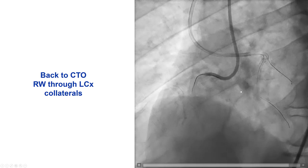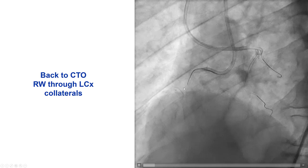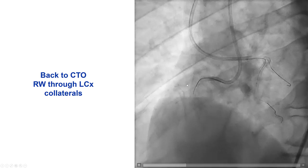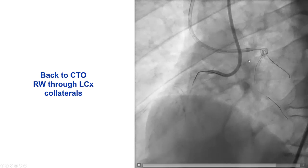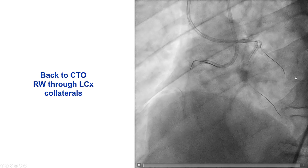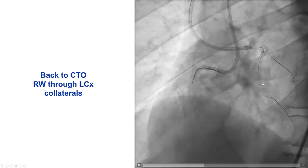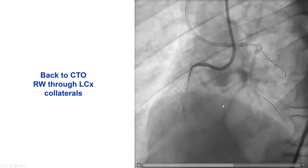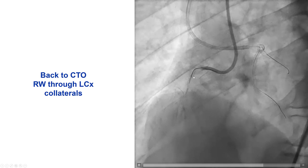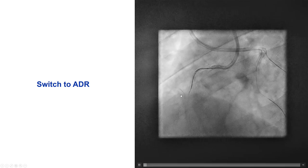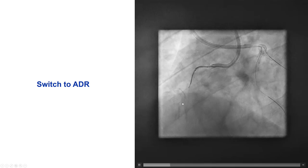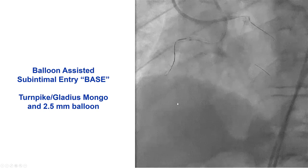We then decided to go back to crossing the RCA. We had a brief attempt going retrograde through the epicardial from the circumflex, which was not successful, and then went back antegrade again. We had difficulty crossing the proximal cap and switched to antegrade dissection and reentry.